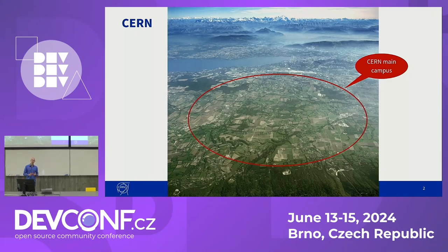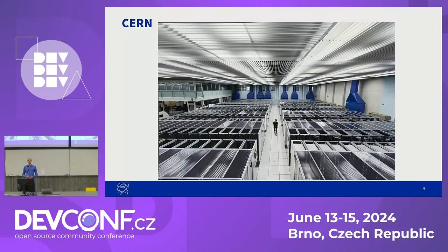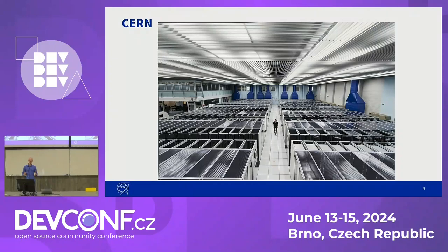We then collide these particles into each other and study what is happening during the interaction. To analyze this we have gigantic sensors and detectors. These record what is happening during the collisions and that data then gets streamed to our data center on-premises where the data is being filtered, stored on disk and tape and then later analyzed by scientists all around the world. We do this to understand how our universe is made of and where it's coming from, what happened during the Big Bang.